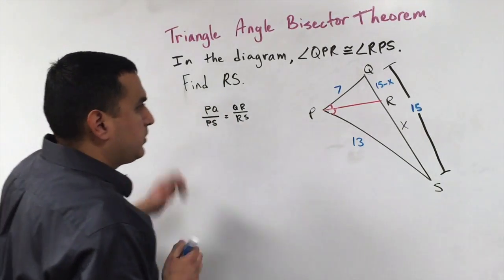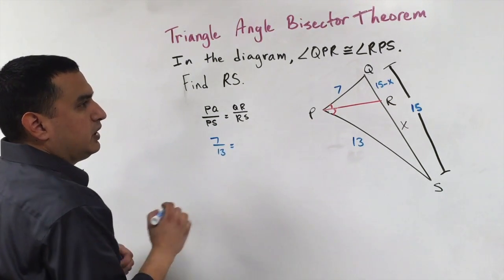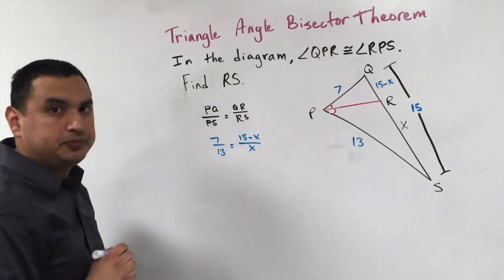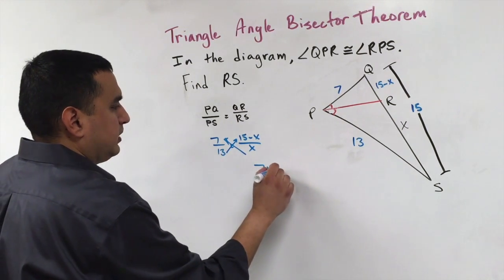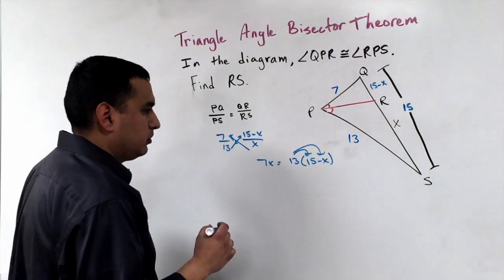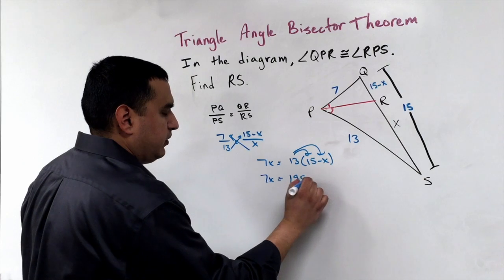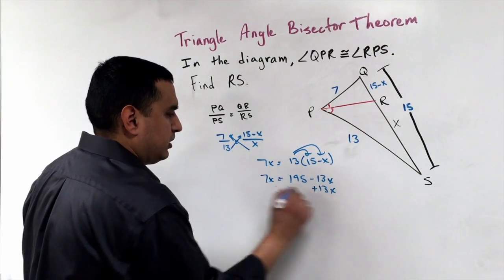So to solve this, I'm going to write 7 over 13 is equal to 15 minus X over X. So cross multiplying here, we get 7X is equal to 13 times 15 minus X, we get that 7X is equal to 195 minus 13X. So adding 13X to both sides,